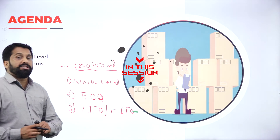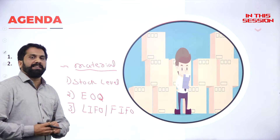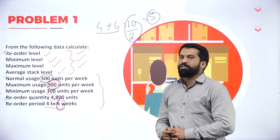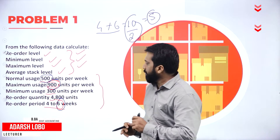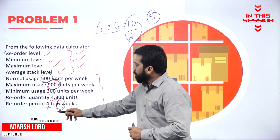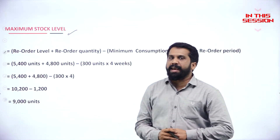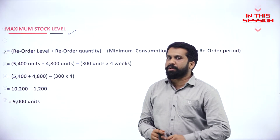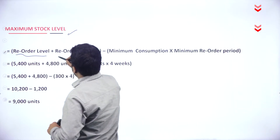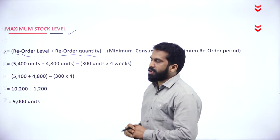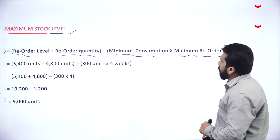LIFO stands for last in first out and FIFO stands for first in first out. In the question, if they have not given the normal reorder period, you have to go for minimum plus maximum divided by 2. The formula for maximum stock level is reorder level plus reorder quantity, minus minimum consumption into minimum reorder period.